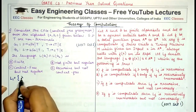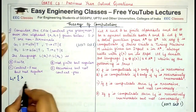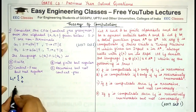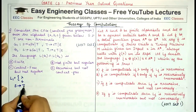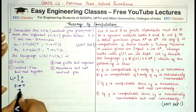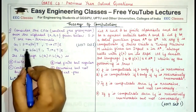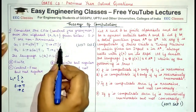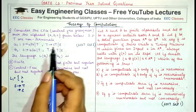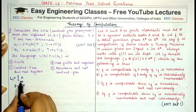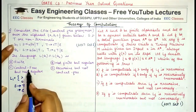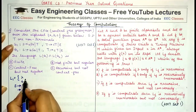Lambda is generated by starting with the start symbol, going to T, and from T replacing it with epsilon. So: start with S, go to T using the production S→T, then use the second production T→λ. Lambda is one of the strings present in language L1 generated by G1.